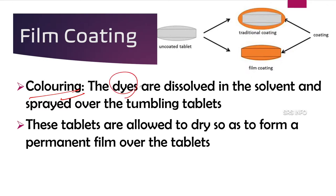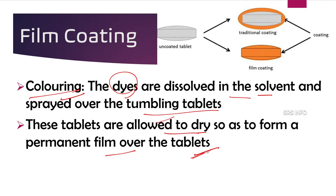After drying, the next step is coloring. For coloring, the required dyes of the required colors are dissolved in the solvent and sprayed over the tumbling tablets in the coating pan. After the color is completely and equally distributed on the tablets, the tablets are allowed to dry so as to form a permanent film over them.